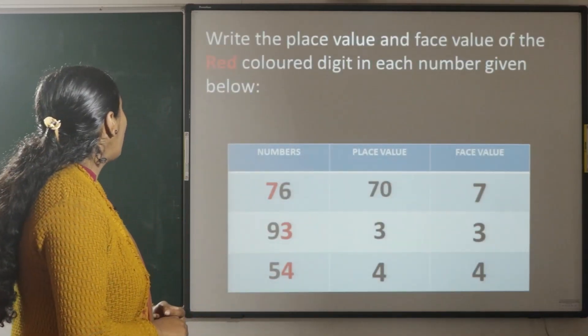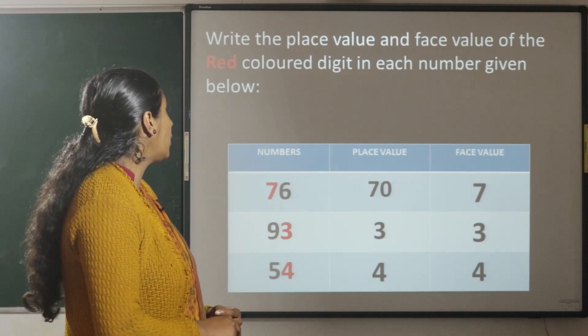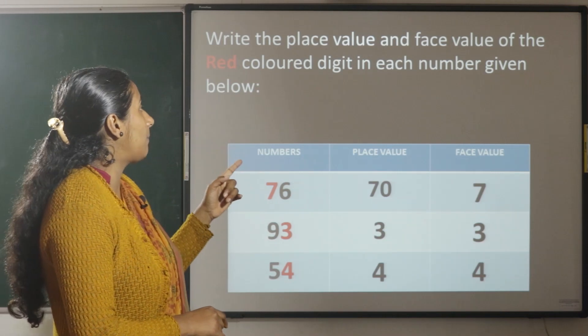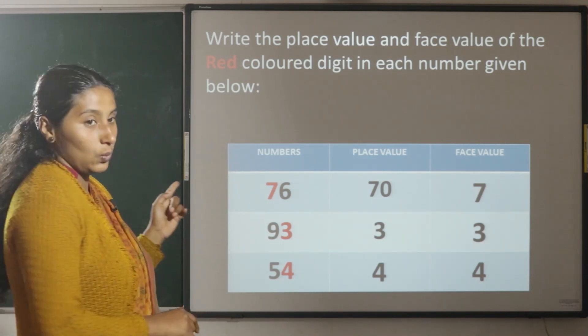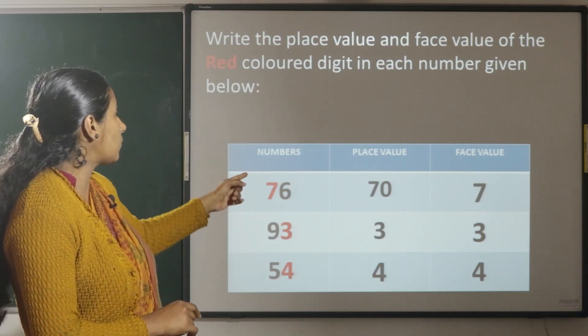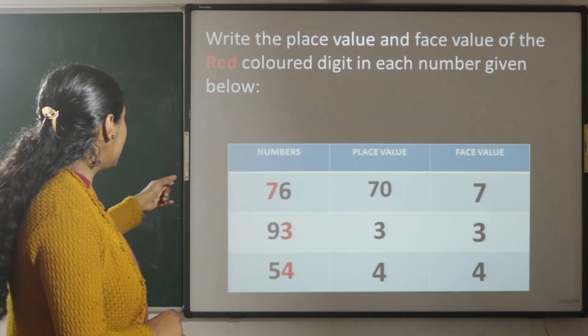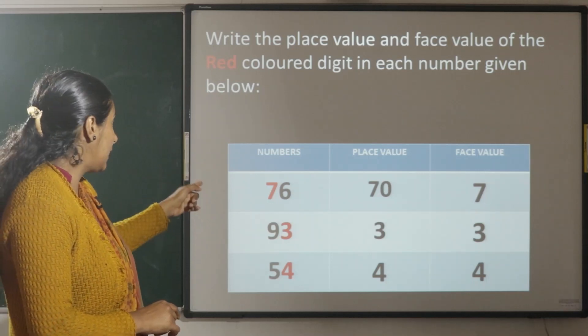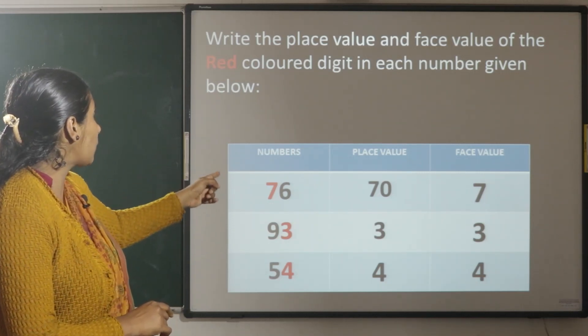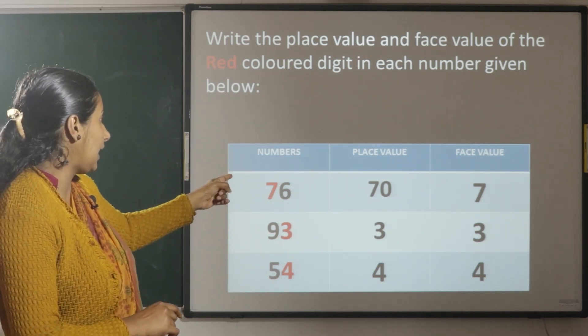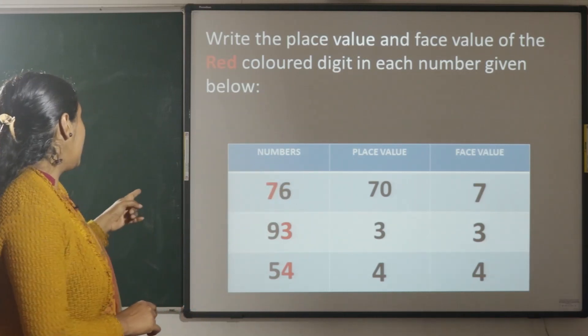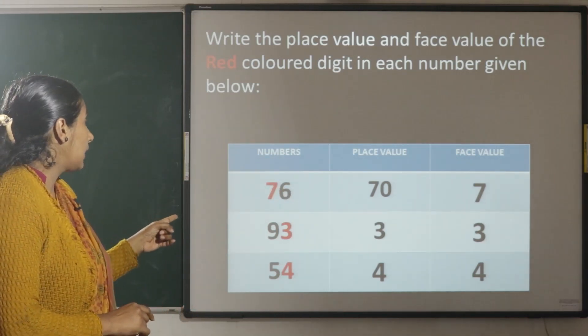Now, write the place value and face value of the red color digit in each number given below. The place value of 7 is 70 and face value of 7 is 7. So, 93.